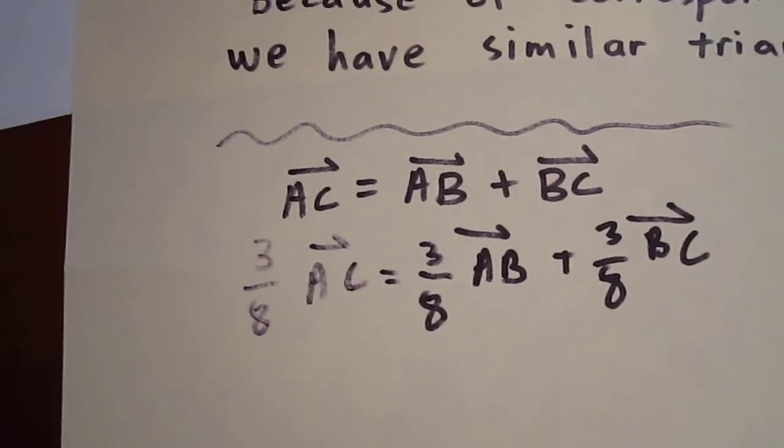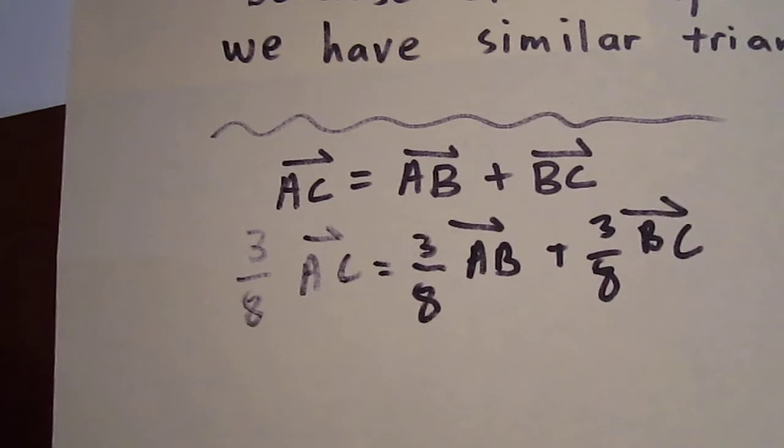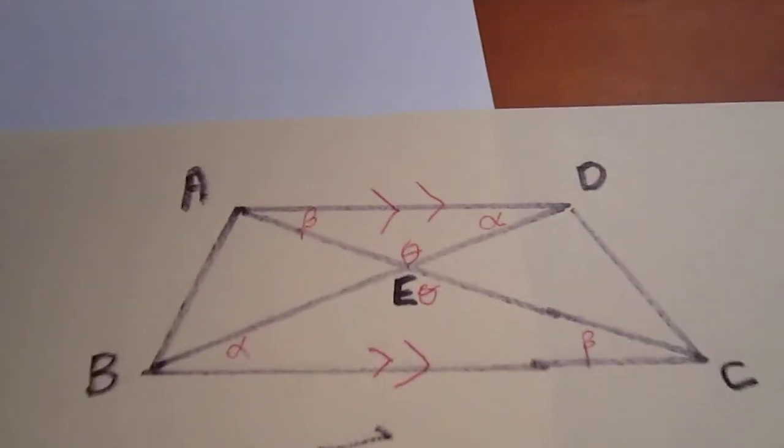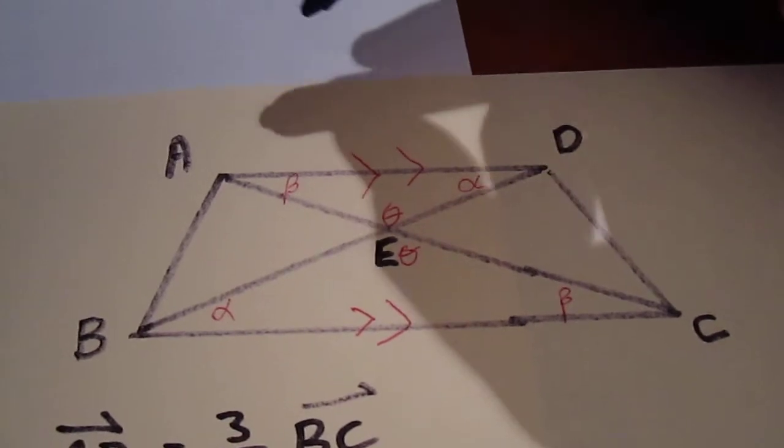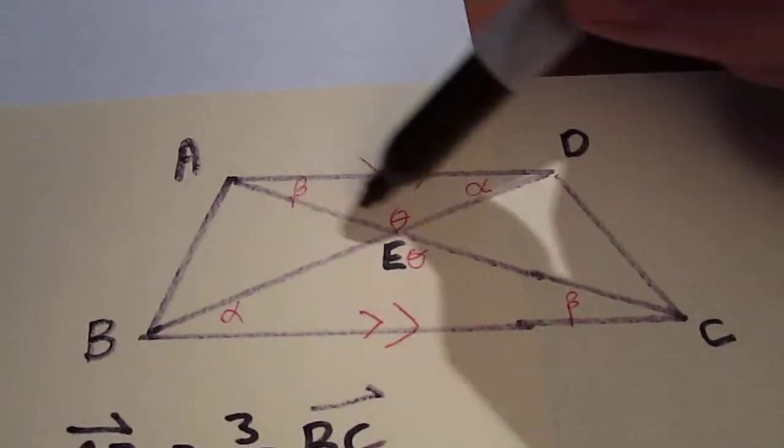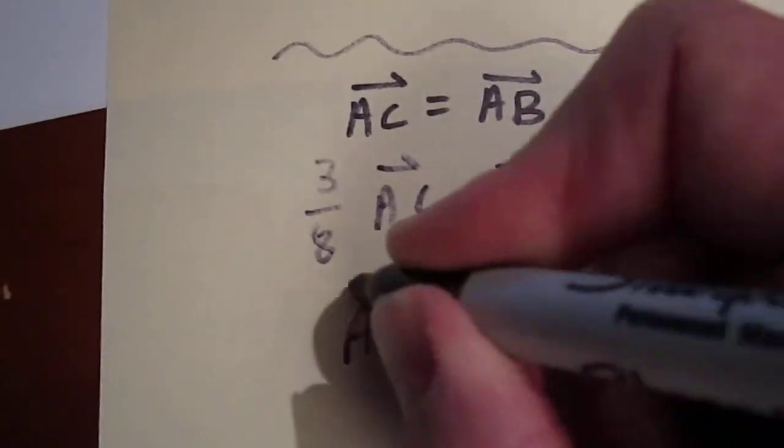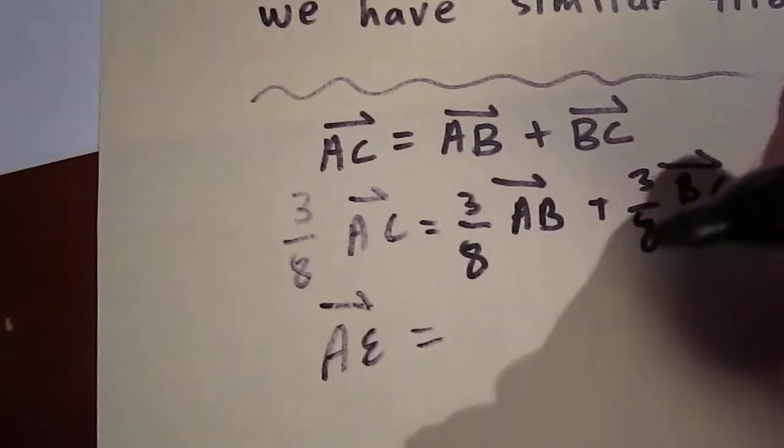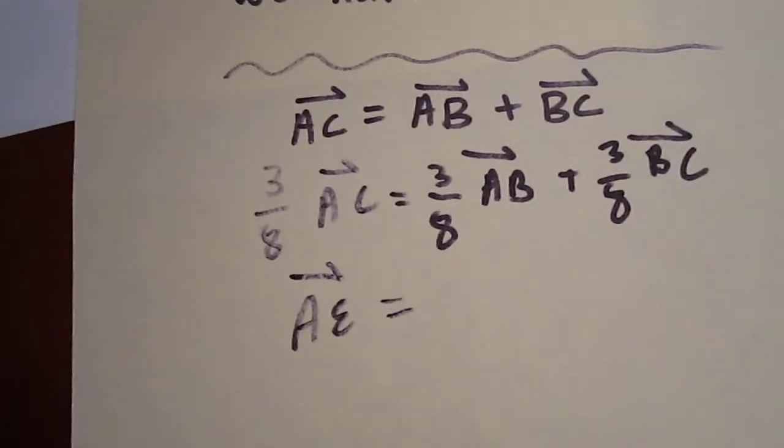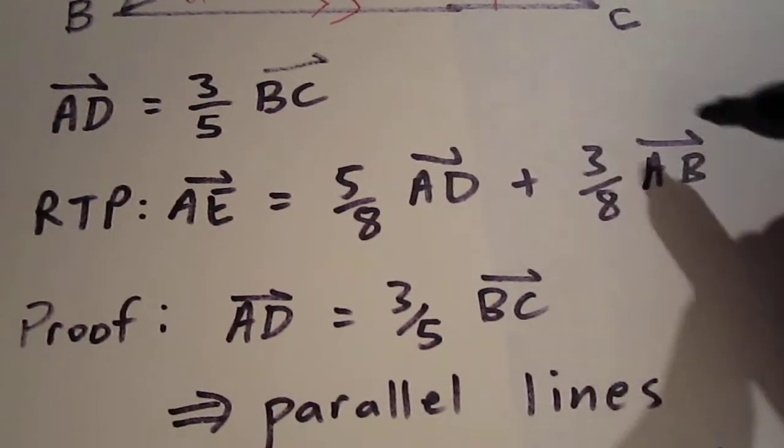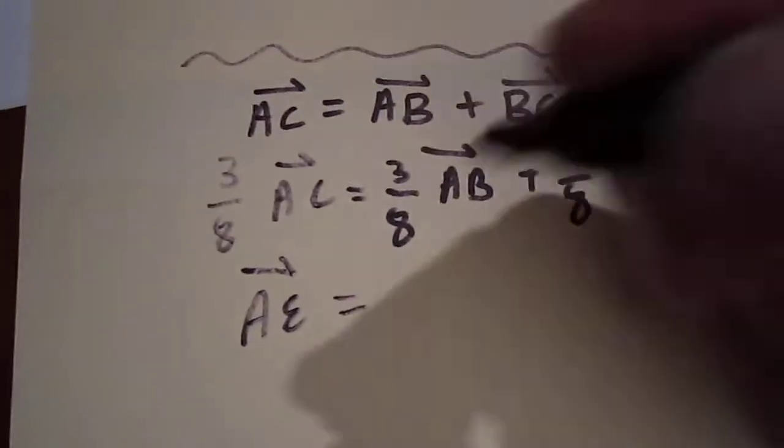Now, I know what 3 eighths of AC is. 3 eighths of AC is AE. Just to refresh your memory, 3 eighths of AC is A to E. So, I write that down. 3 eighths of AB is actually part of what I'm being asked to prove. So, I'm going to leave that alone clearly.